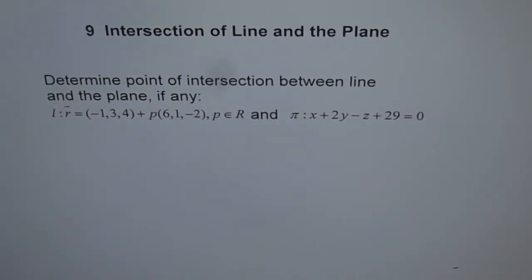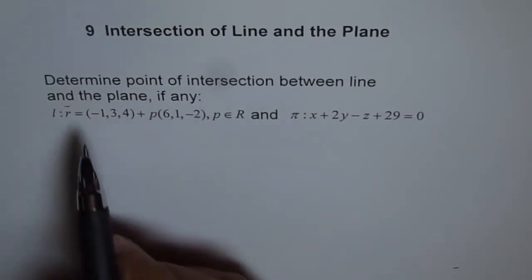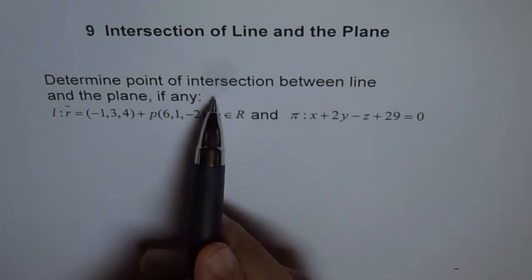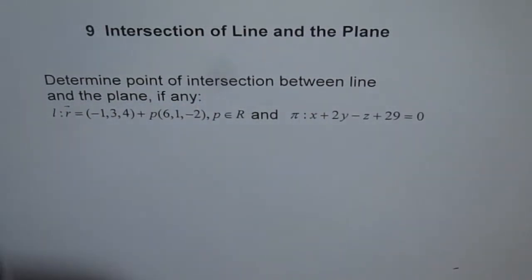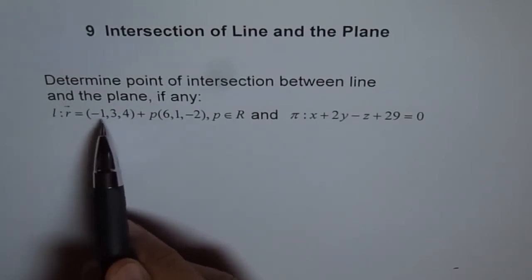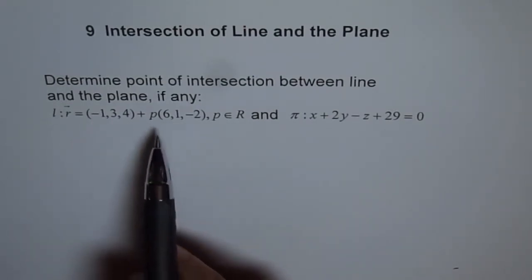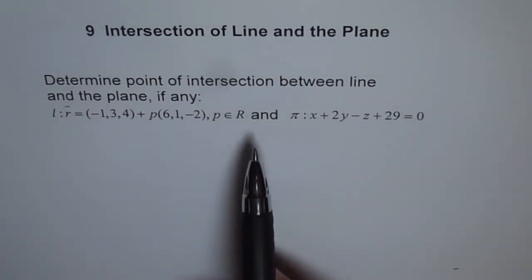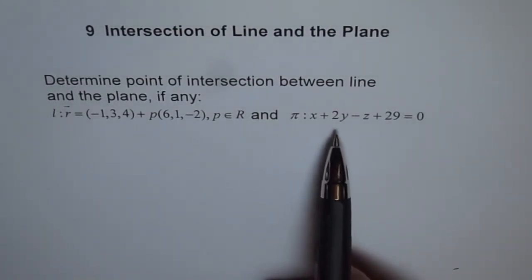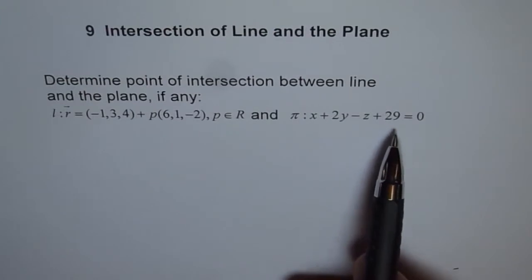Intersection of line and the plane. Determine point of intersection between line and the plane if it exists, if any. So the line here is (-1, 3, 4) + p(6, 1, -2), where p belongs to real numbers, and π: x + 2y - z + 29 = 0.